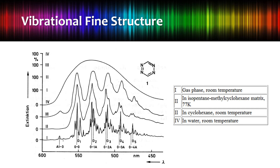You can explore this with a specific molecule under different conditions. In water at room temperature (spectrum 4), solvent effects cause the molecule to tumble, rotate, and vibrate extensively, producing a broad spectrum. In gas phase with no solvent effects, you see many sharp peaks corresponding to the fine vibrational energy differences.